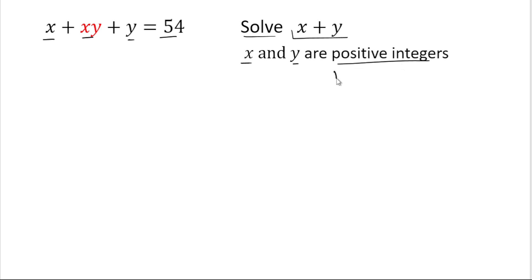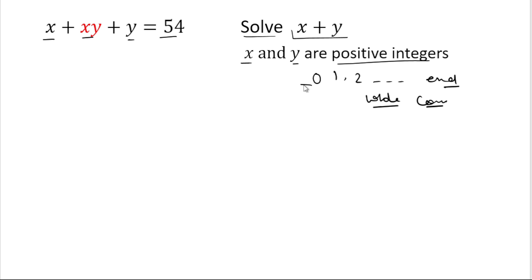The meaning of positive integers is 1, 2, 3, and so on — any whole number or complete number. The value cannot be 0 or less than 0, so we're looking for any positive complete number. Now we'll solve this expression.